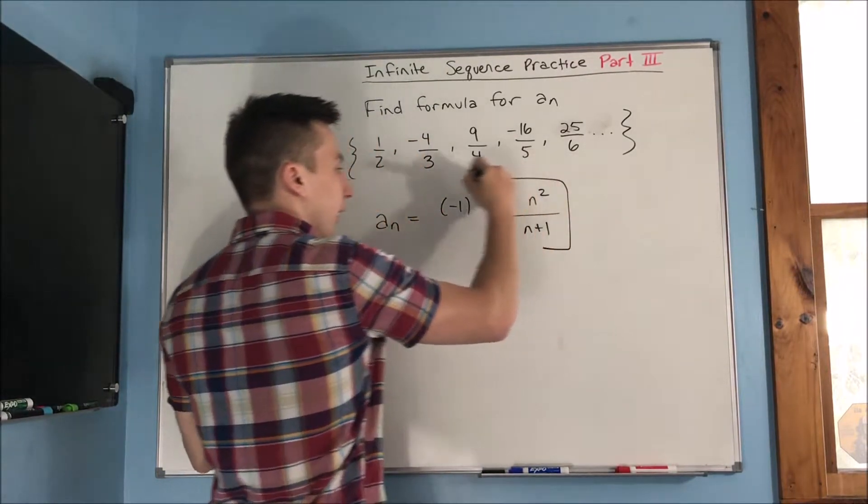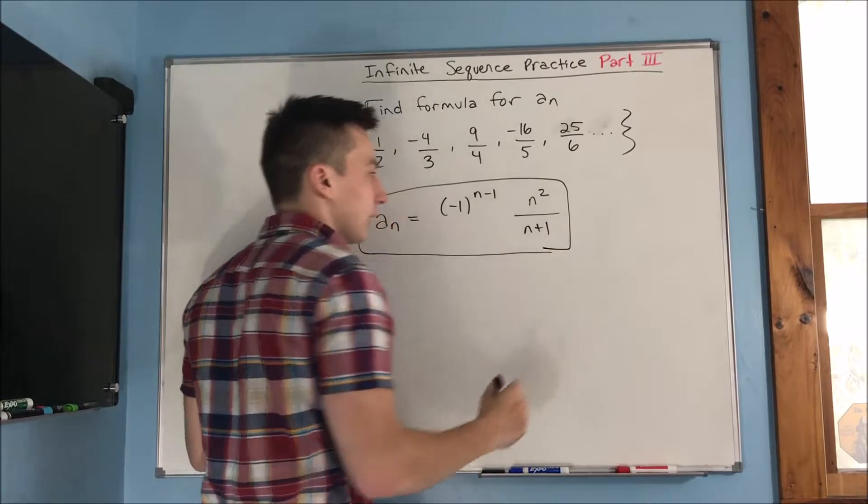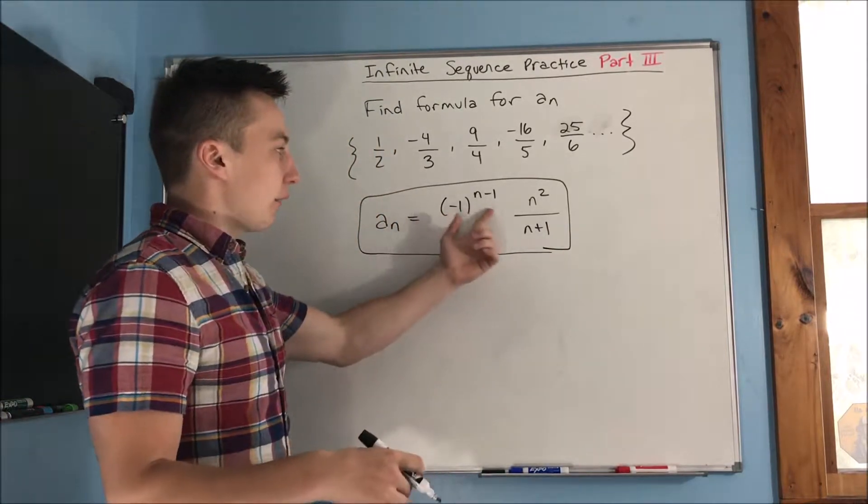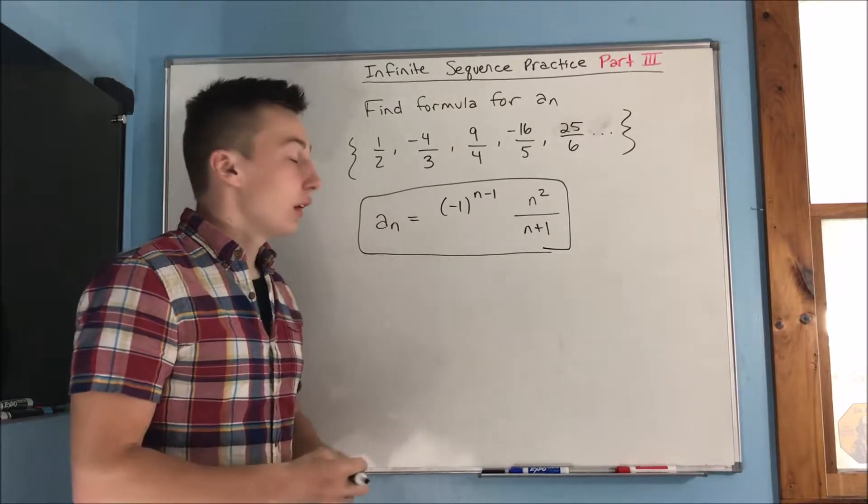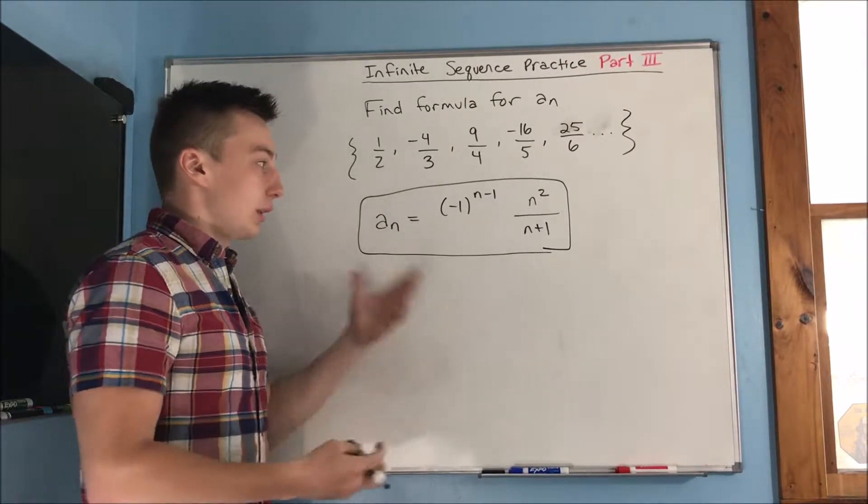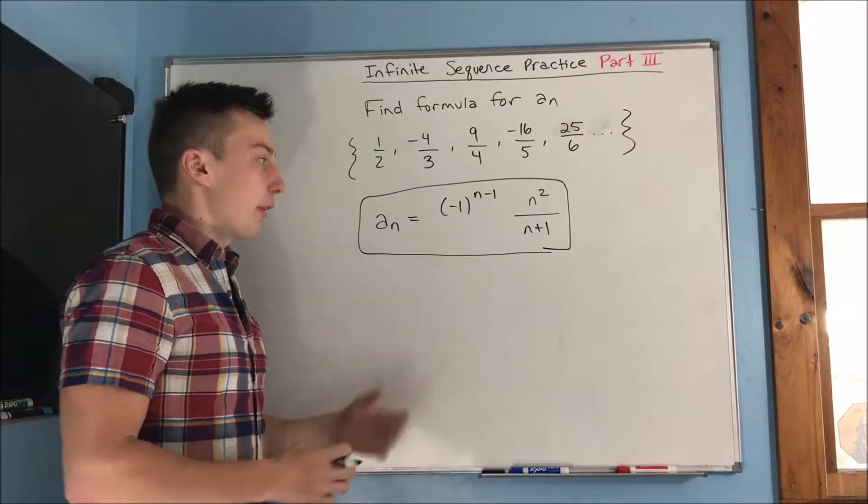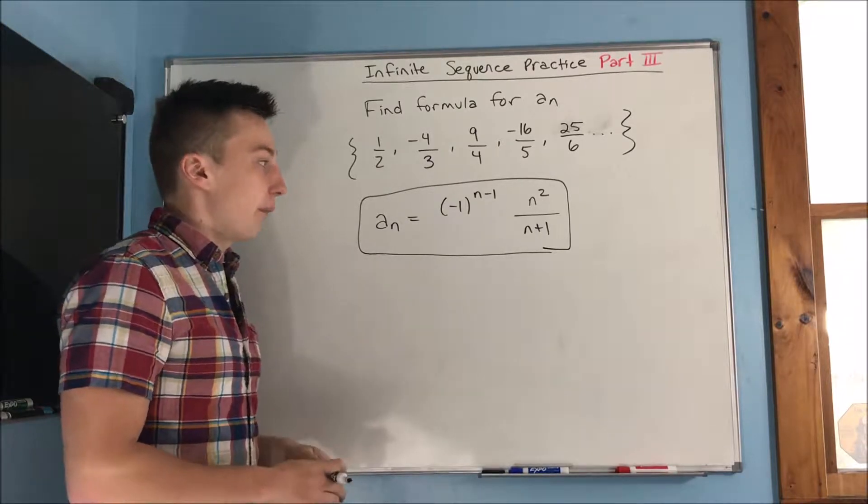So this is actually just going to end up being our answer. We're not going to be able to simplify this at all. This is the only thing that we have a power to that has n in it, so we're not going to be able to end up simplifying this at all. So this is going to be our answer here.